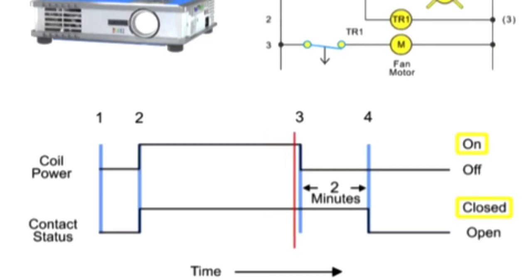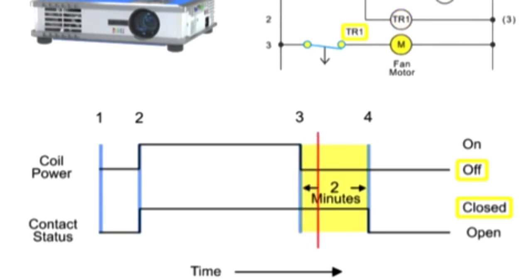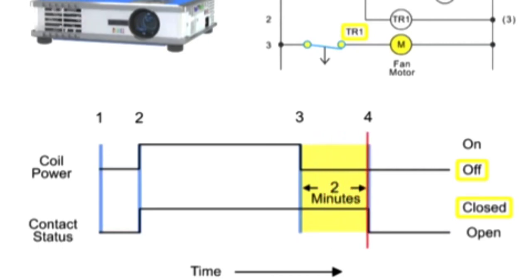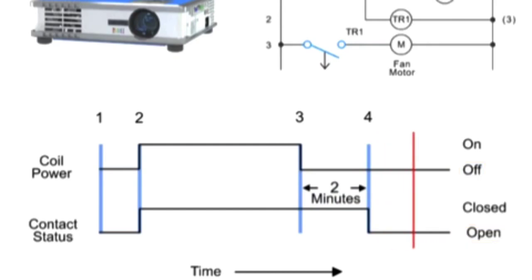When switch S1 is opened, the projector bulb turns off and power is removed from the timer. Contacts TR1 remain closed for a preset period of time and then open, causing the cooling fan to turn off. This off-delay timed open circuit is generally set to adequately cool the projector equipment before it shuts off.